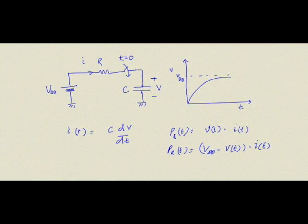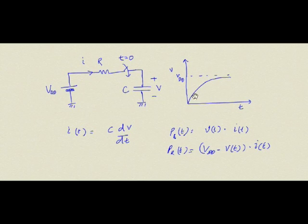Let us begin by understanding the charging and discharging of capacitors from a power perspective — how much power it takes, or what is the energy cost to charge and discharge a capacitor. We have a capacitor of capacitance C, initially at voltage 0, charged through a resistor R from the power supply VDD. The resistance R represents the pull-up stack of a CMOS gate. The output voltage goes up exponentially toward VDD.